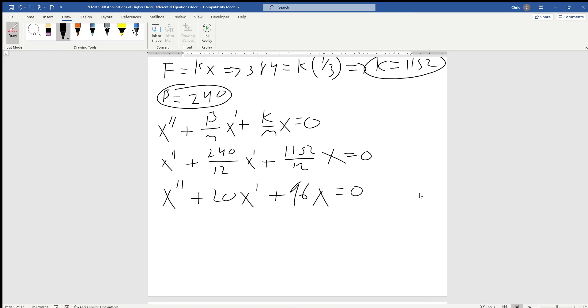Now we just have a really nice second order homogeneous differential, which means we can convert this into a characteristic or auxiliary equation. We can factor this one really nicely. 96 is 12 times 8, and that equals 20 in the middle.